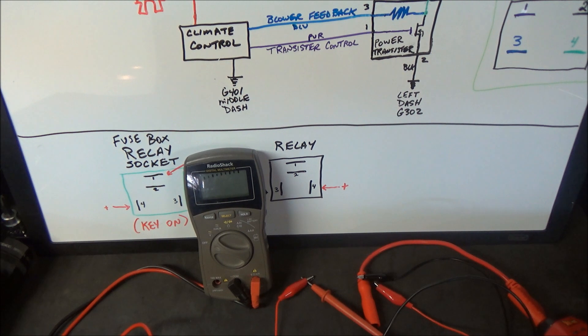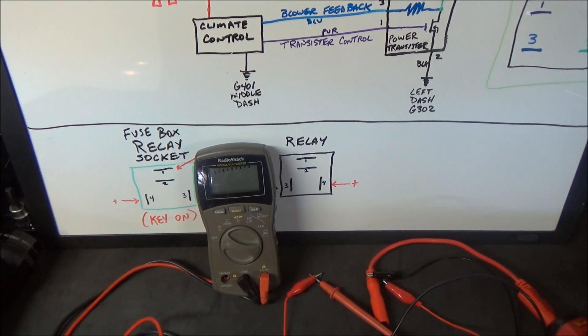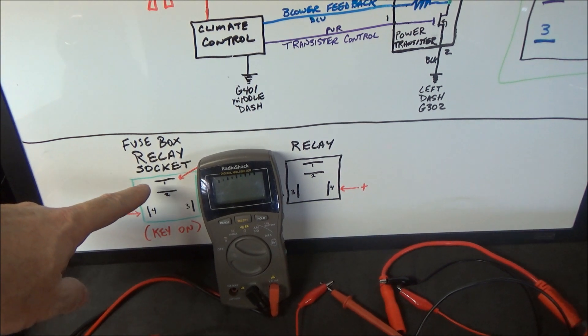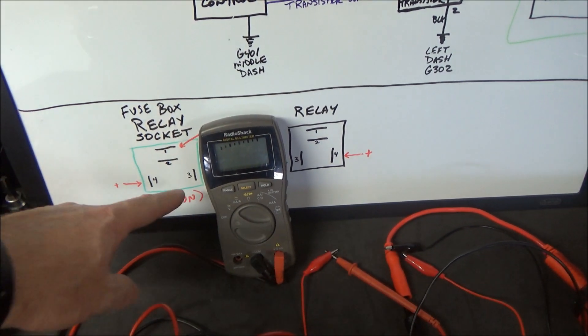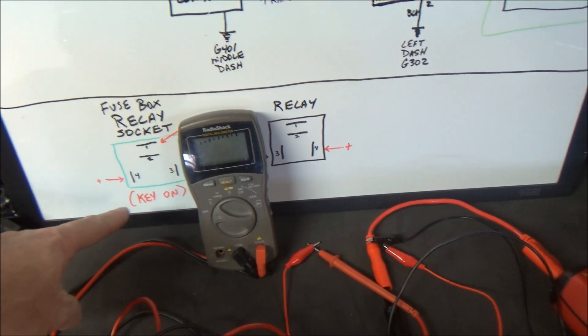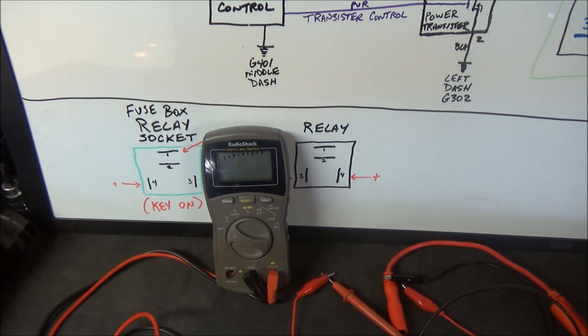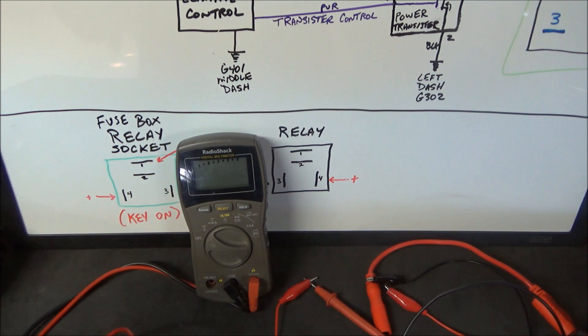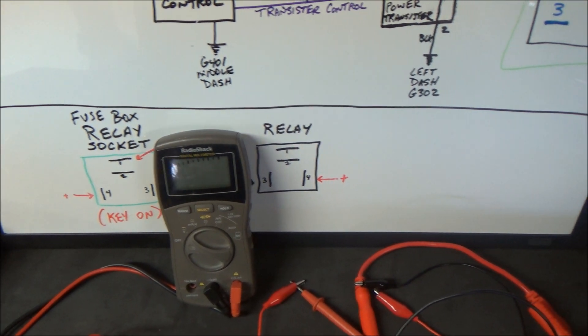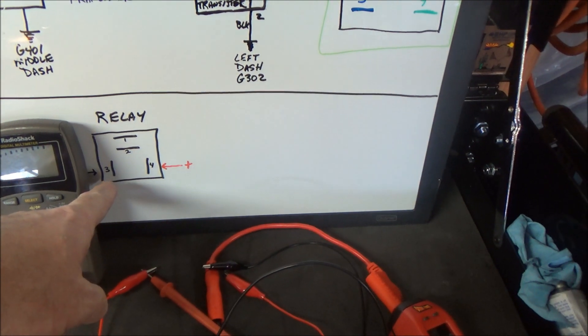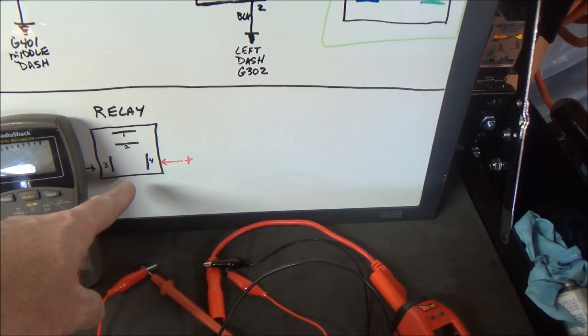Checking a four-pin relay on a Honda is not very difficult. Just make sure in the socket area you've got both of your powers and your ground with the key on—of course on most systems, or with the system energized. Like in the case of air conditioning, you need to make sure the air conditioning button's pushed. On your relay, just make sure you apply power and ground to the control side and make sure the load side has continuity.